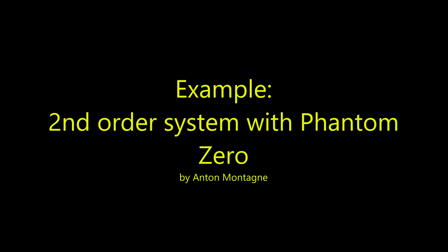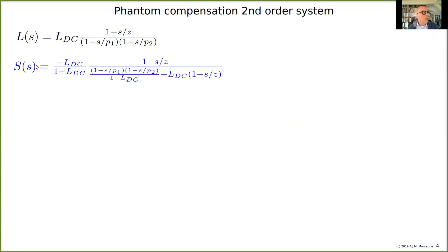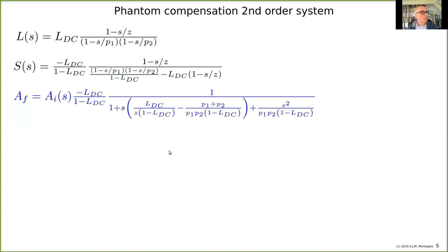We are going to compensate a second order system with a phantom zero. A second order system with one zero can be written such that the transfer function of the loop gain has two poles, one zero, and a DC loop gain. Substituting this into minus L divided by one minus L, we find the servo function, which can be expressed in a specific form. The complete gain from source to load is the ideal gain.